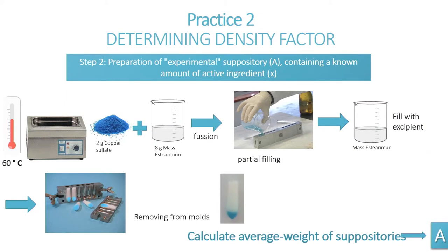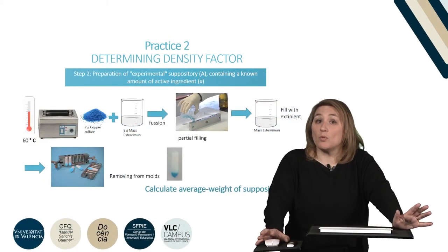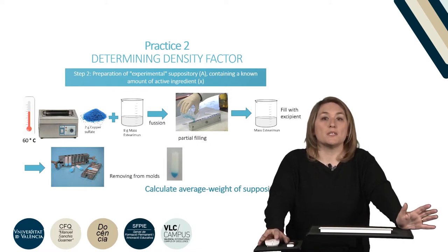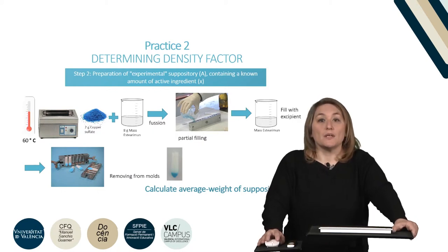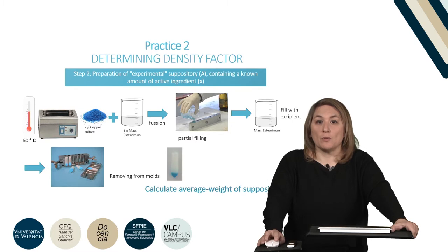In the second step, we are going to elaborate experimental suppositories with a known quantity of active ingredient, which corresponds to the data called X. We start pulverizing 2 grams of copper sulfate, which is our active ingredient, and we incorporate into 8 grams of molten excipient by soft stirring. The suspension is then poured into the mold, previously cooled, to achieve rapid solidification. In this case, the alveoli are not completely filled, so more molten excipient will be added until they are filled in excess. After that, we let them cool and remove the excess with a spatula. Afterwards, we extract our suppositories from the mold and calculate the average weight, which will be the value named A.